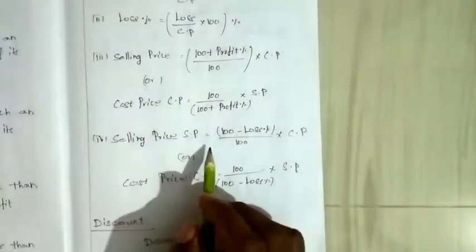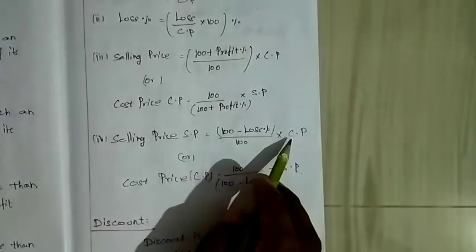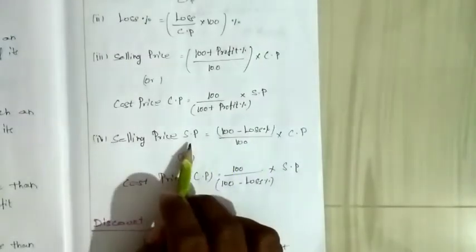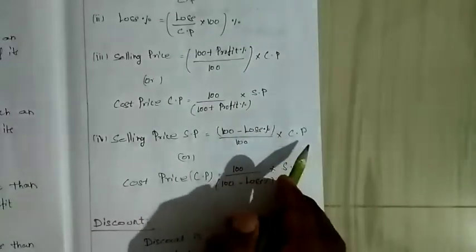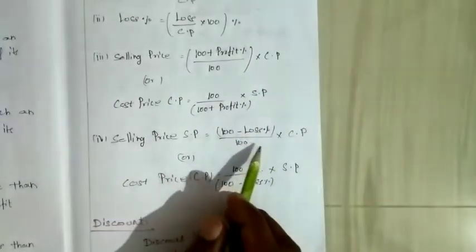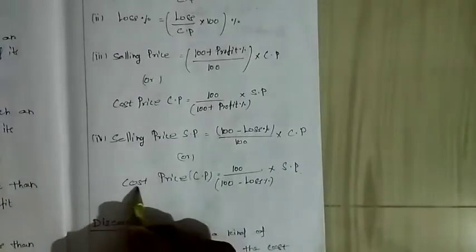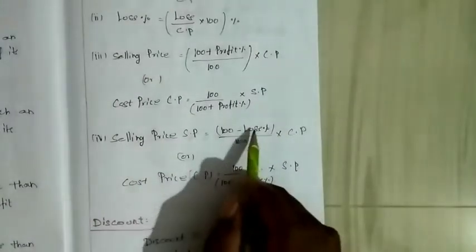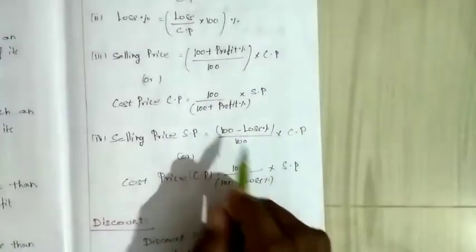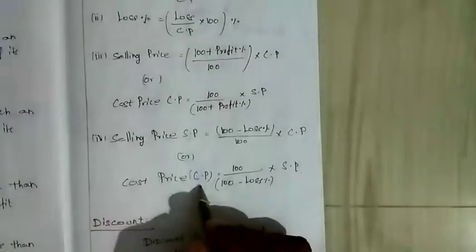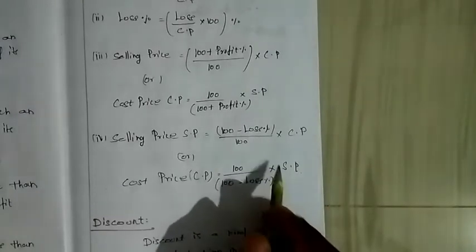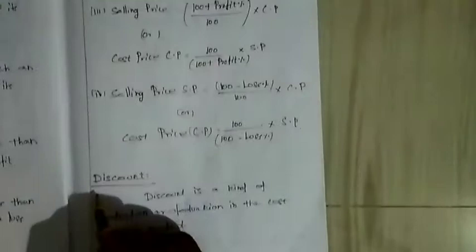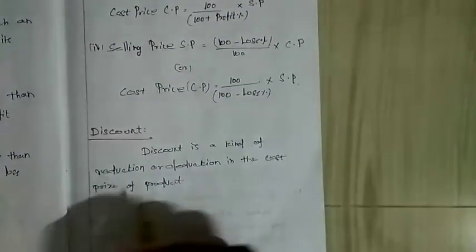When loss percentage is given: Selling price = ((100 minus Loss%) divided by 100) into CP. And Cost price = (100 divided by (100 minus Loss%)) into SP.